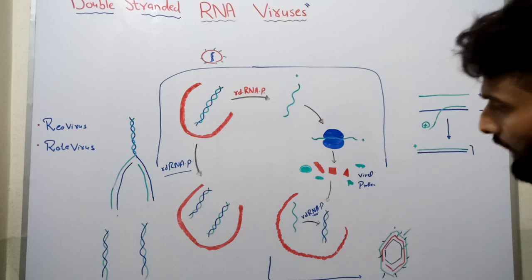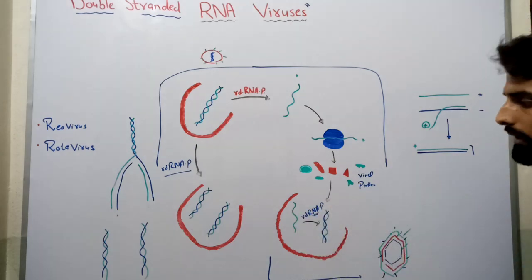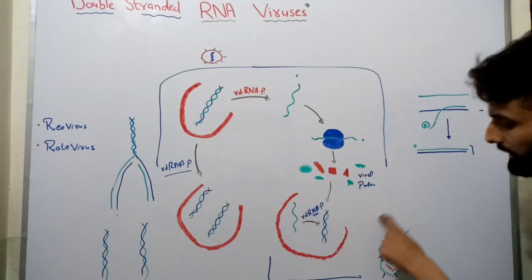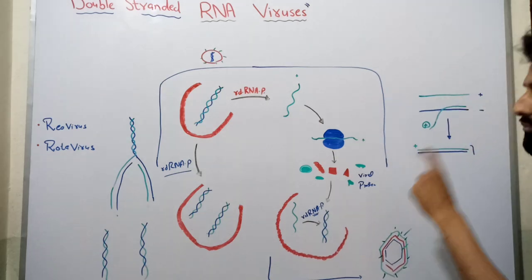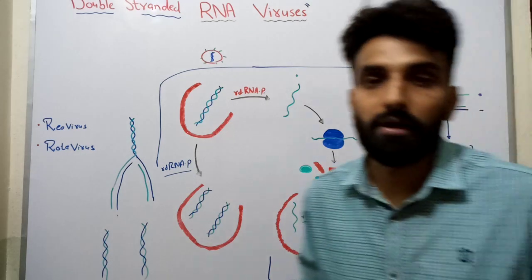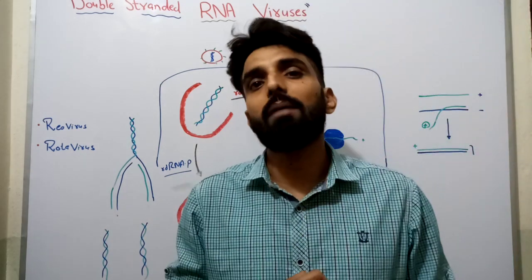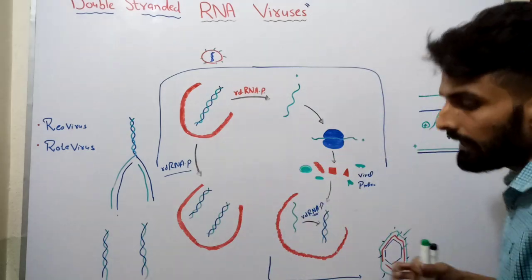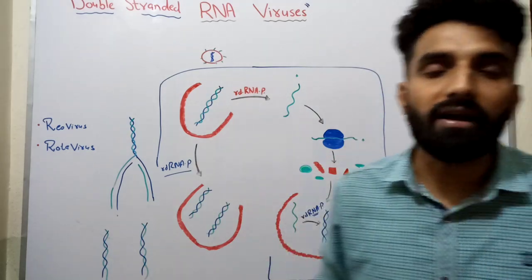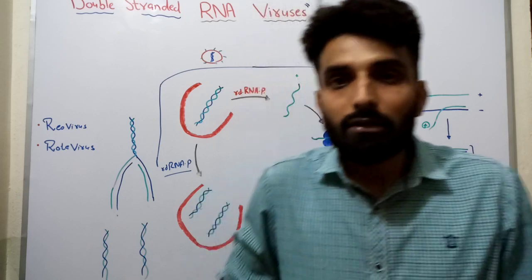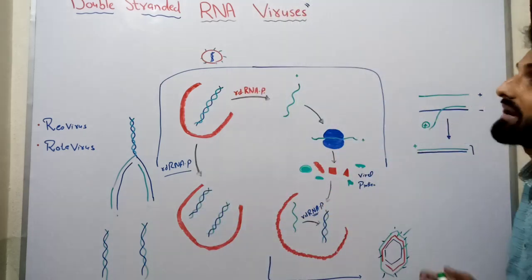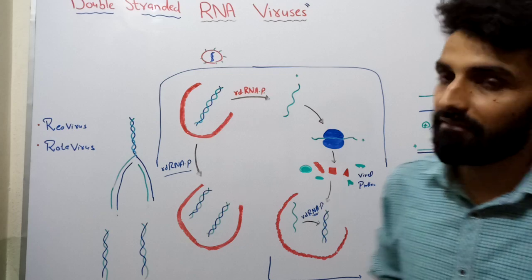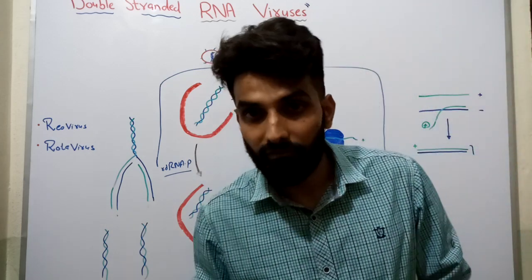With the help of other viral proteins, the nucleocapsid and double-stranded RNA get assembled and a complete viral structure is formed. This complete viral structure is then ready to exit the cell and infect nearby cells. This was the whole mechanism of replication of double-stranded RNA viruses.